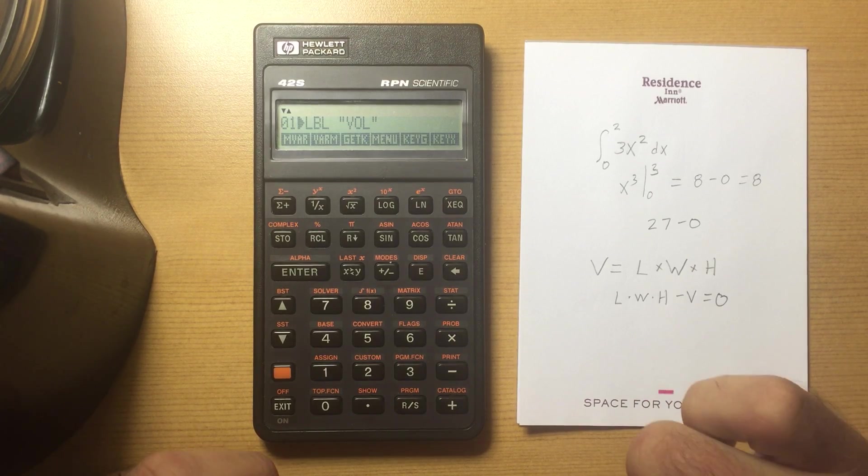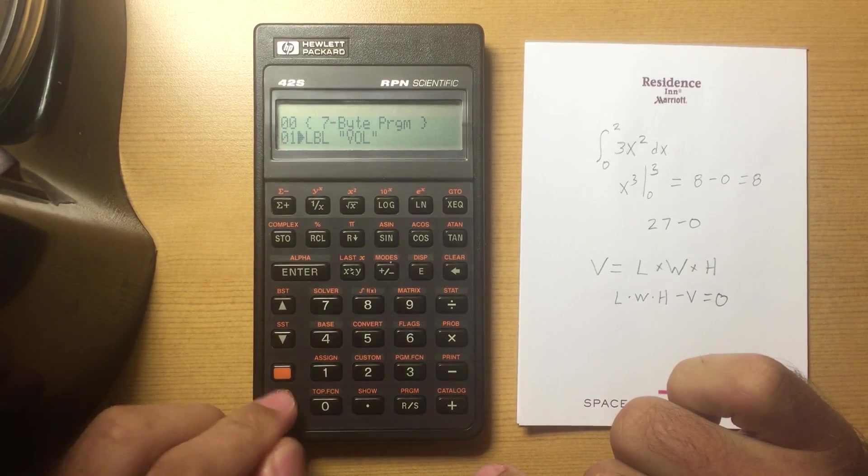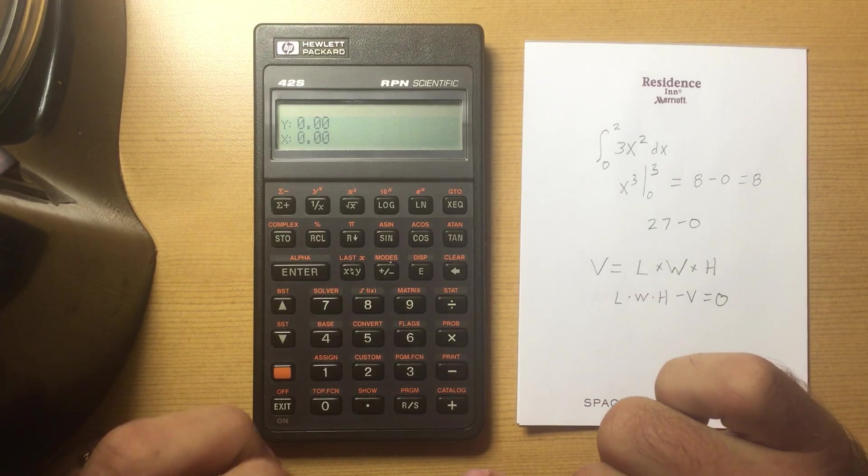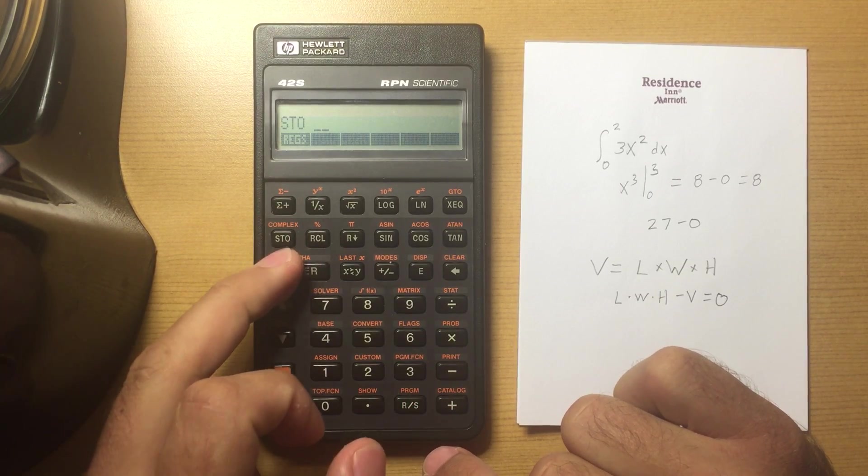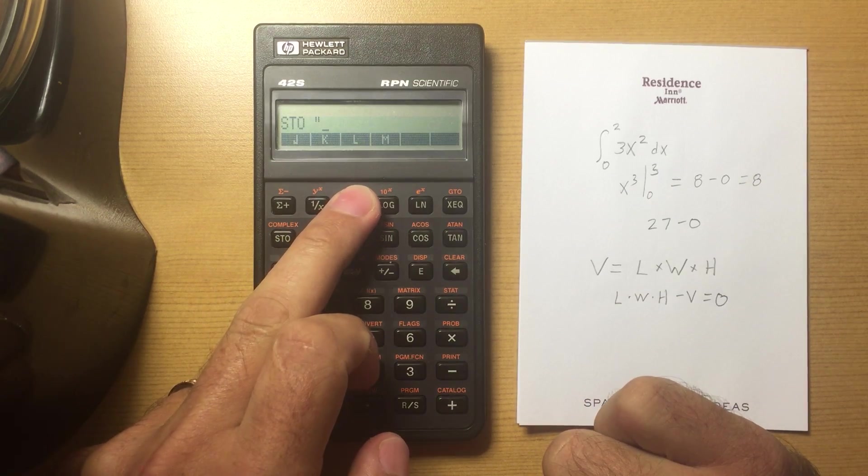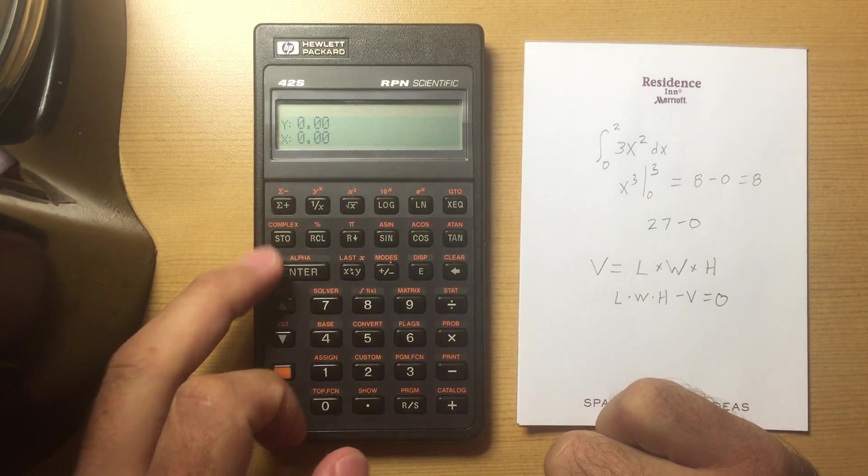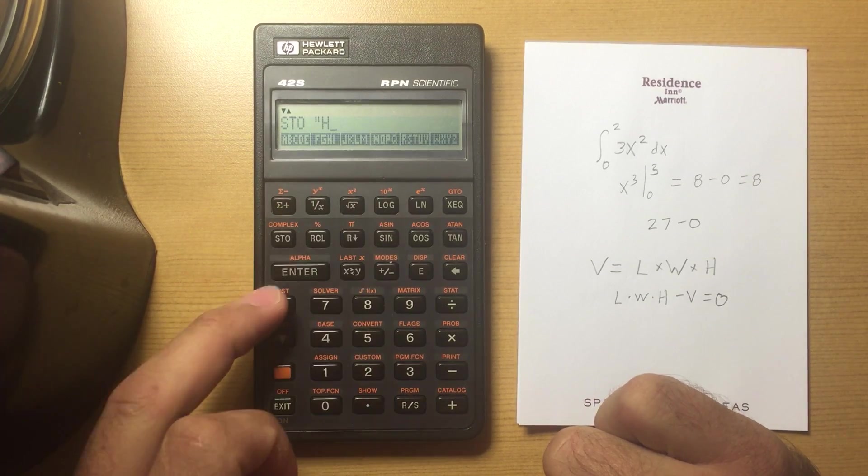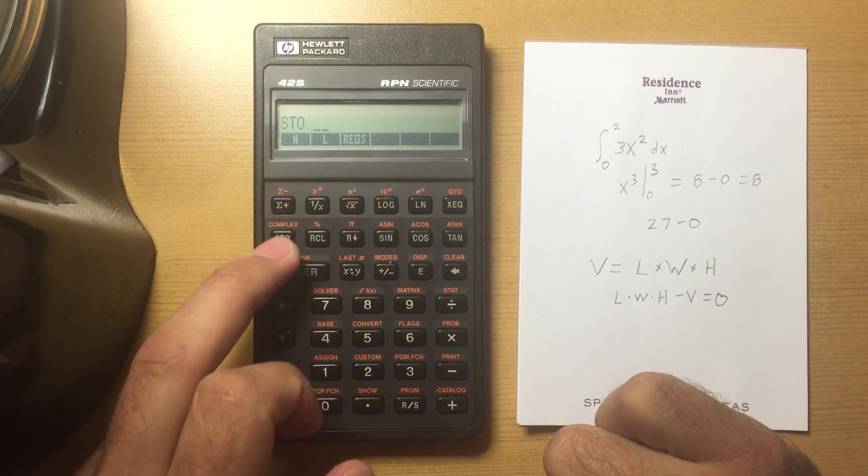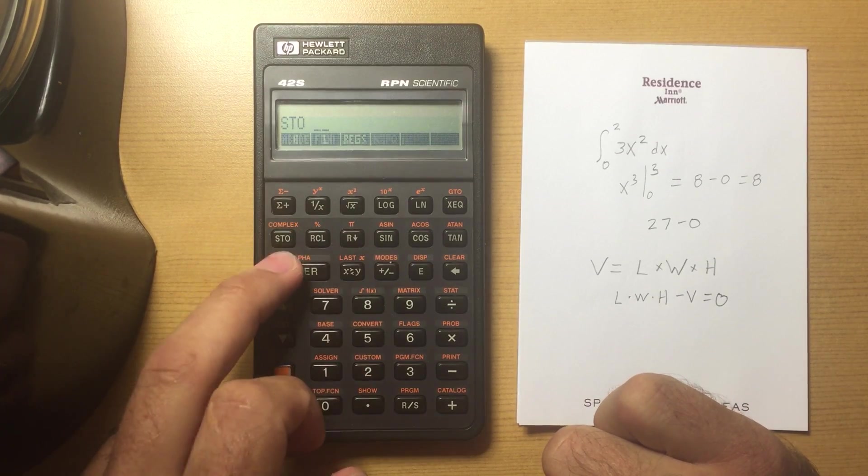that easier on myself, I'm going to input them here by storing zero values to create them. I'll store zero into L, store zero into H, store zero into W,